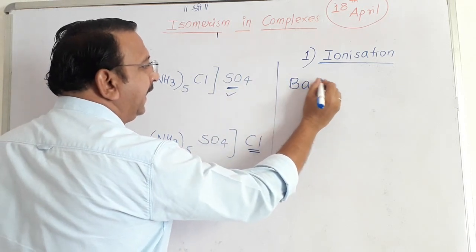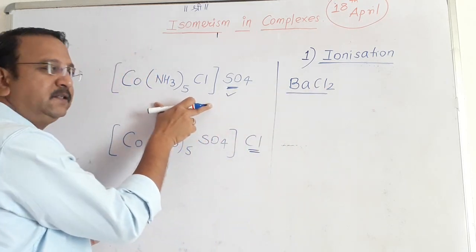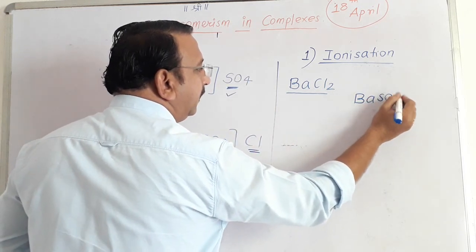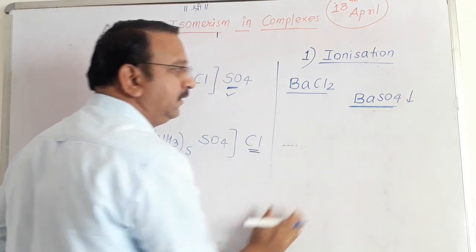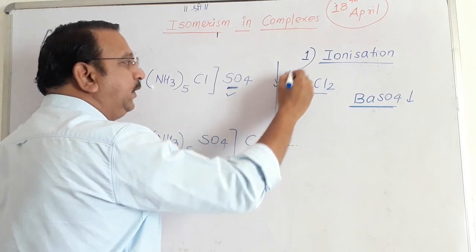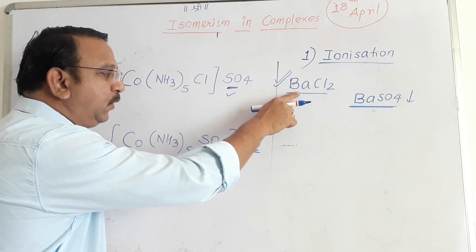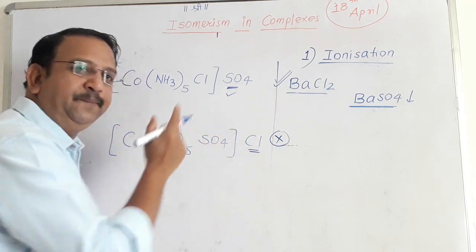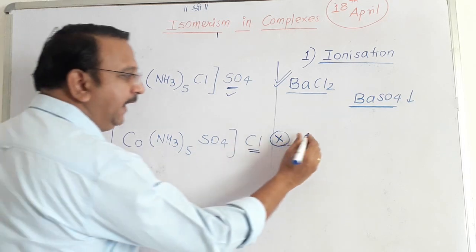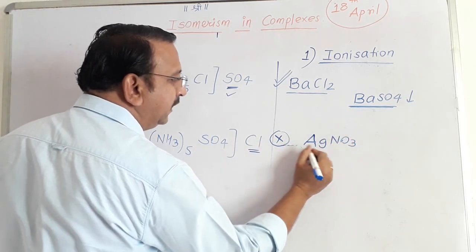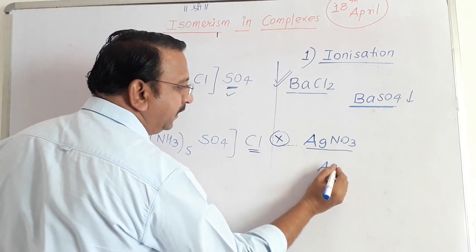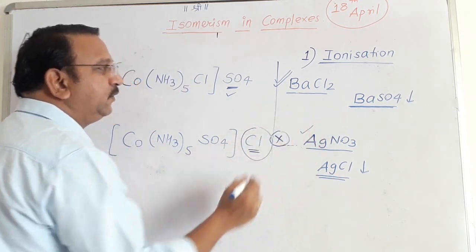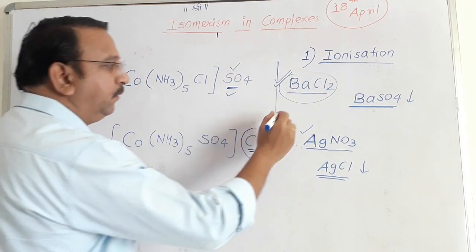So this particular complex will give you a positive test for barium chloride. Now the same barium chloride if you add it in this complex, nothing is going to happen. It will not give any precipitate. But suppose you add AgNO3 solution here, silver nitrate solution, you will find that Ag can combine with Cl to form AgCl which is a white precipitate.